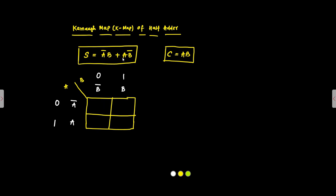For the sum output, we place 1s in the cells corresponding to Ā·B and A·B̄. There is no possibility of pair formation, quad formation, or any grouping, so individual single-cell groups are formed. The result is Ā·B + A·B̄, which confirms our original sum expression.